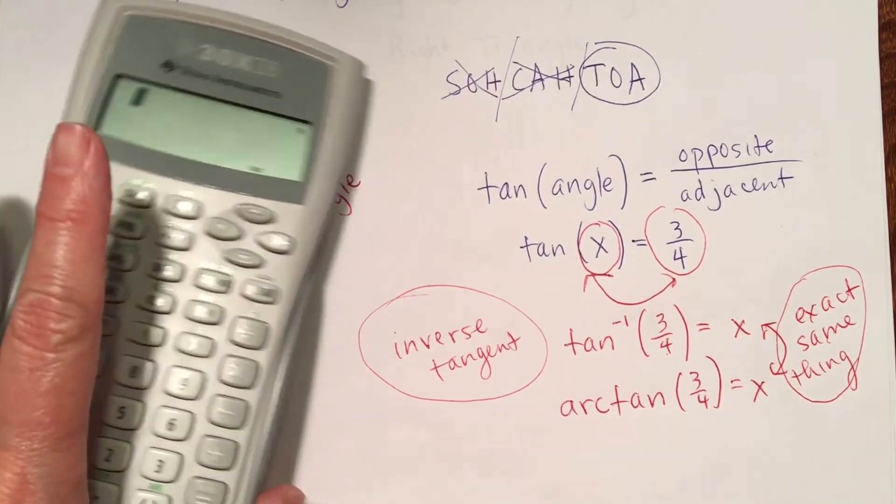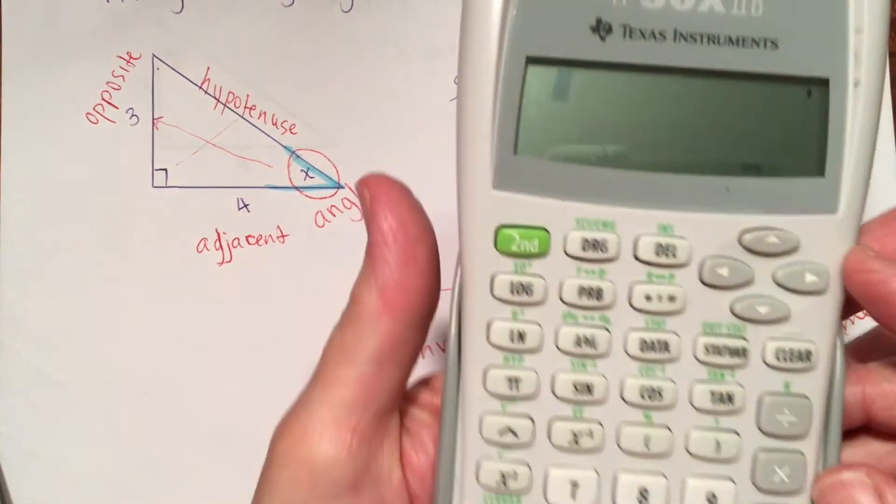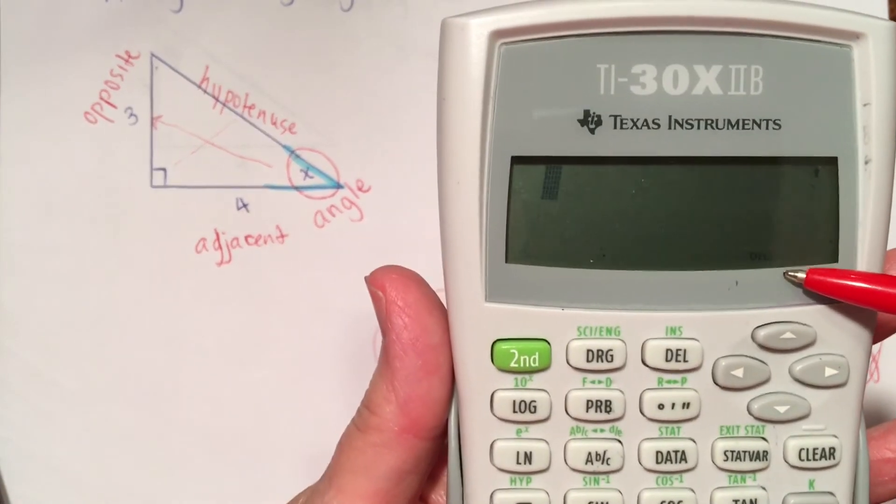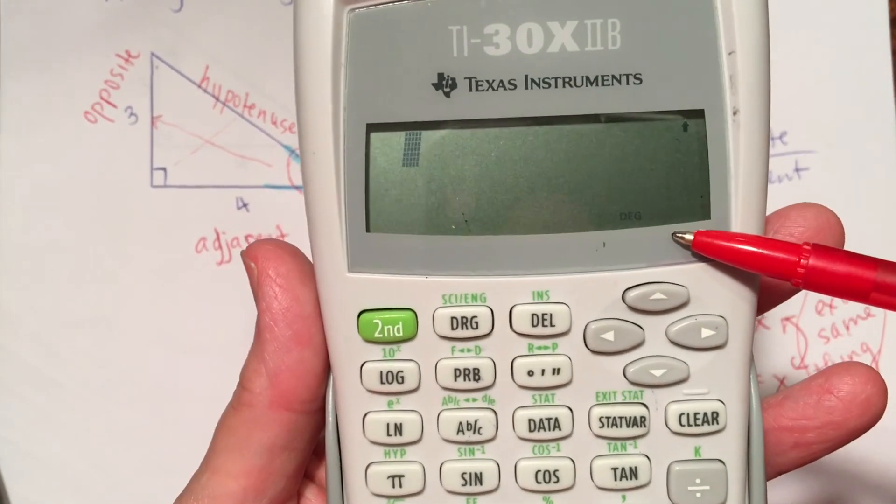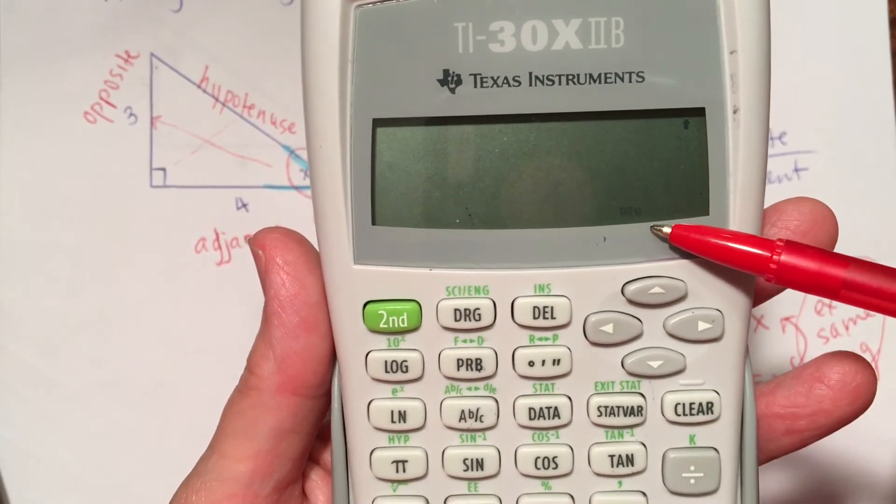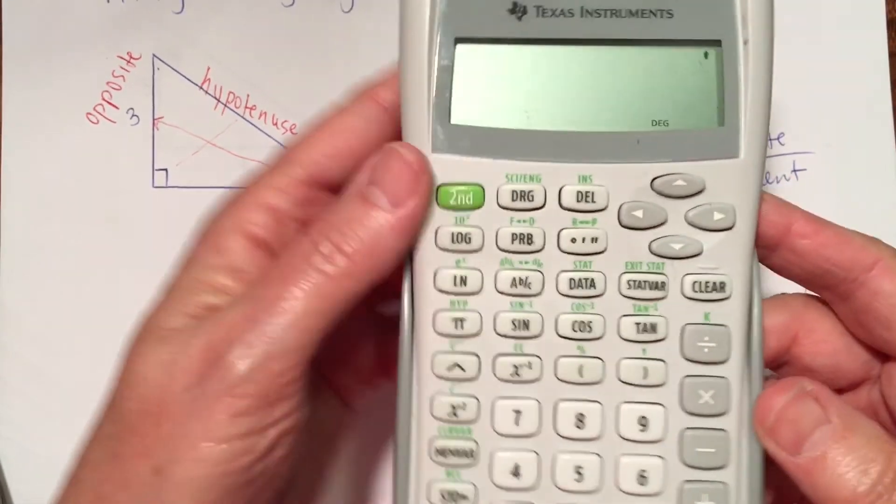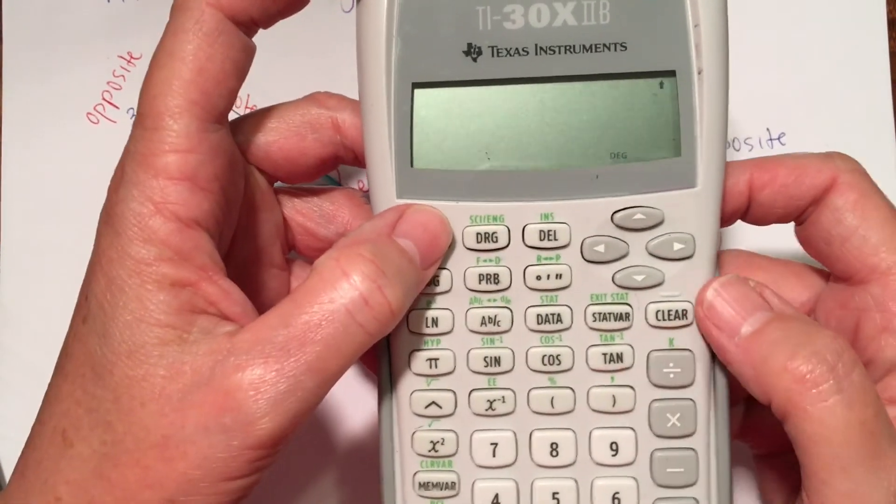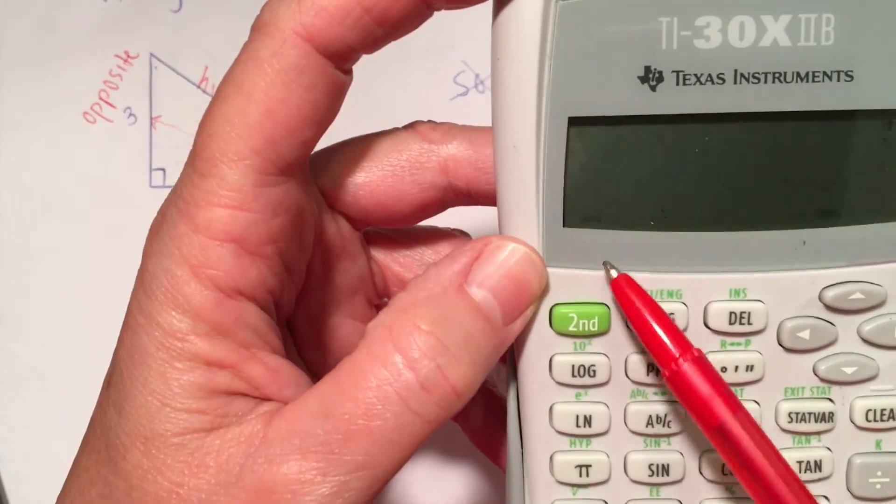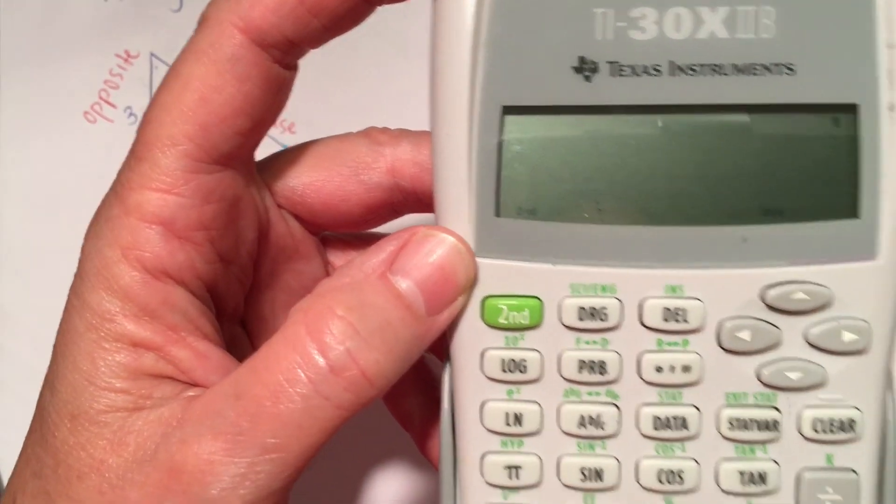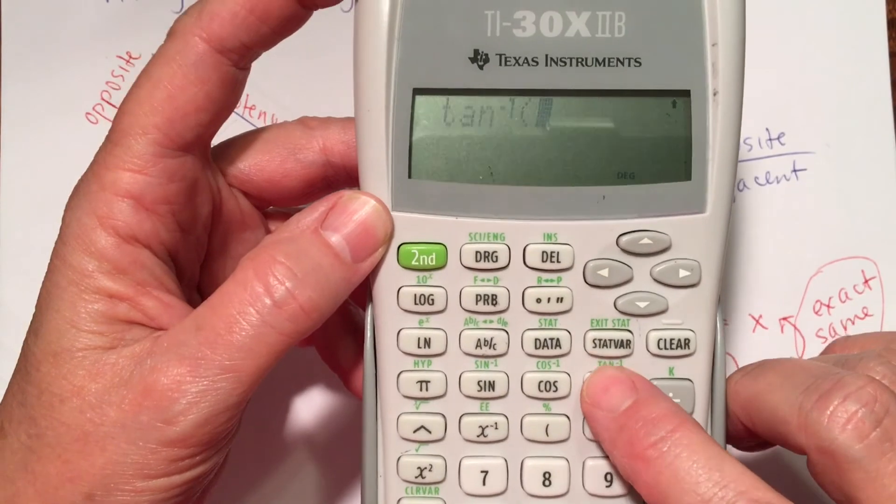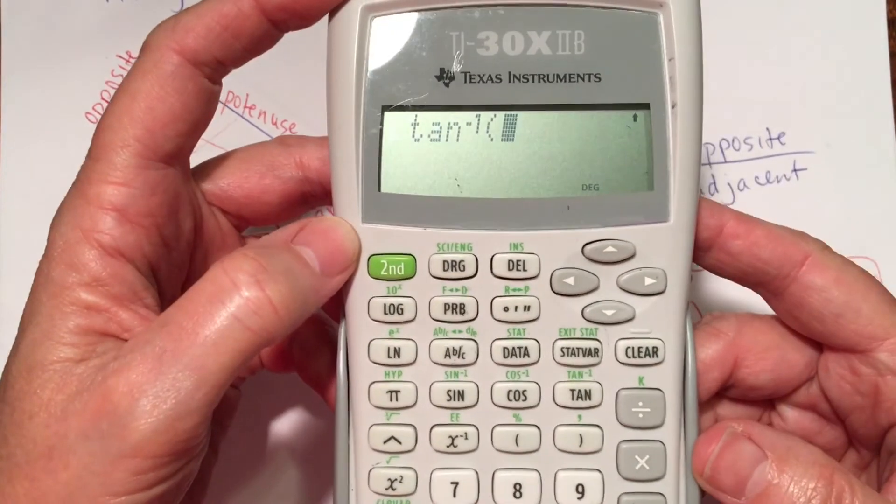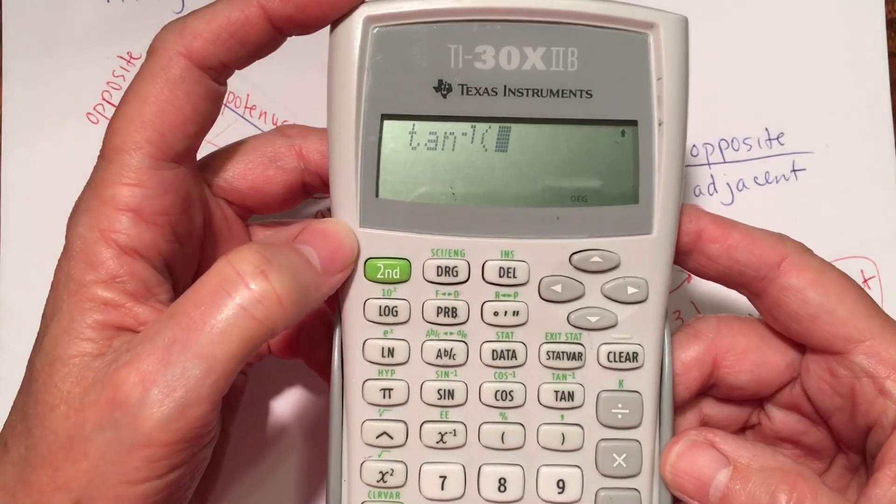Well, let's look at this. How do we put this in the calculator? First of all, I see my calculator is in degrees. I want to make sure it's in degrees for these problems. And what I will do, I'm going to press second. And you can see the little second on the display right there. Press tangent. And the calculator is doing inverse tangent.